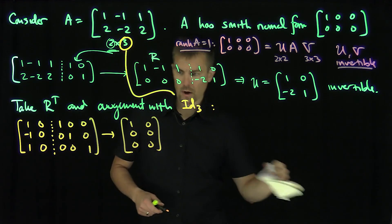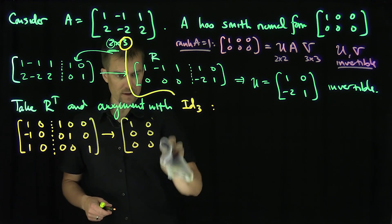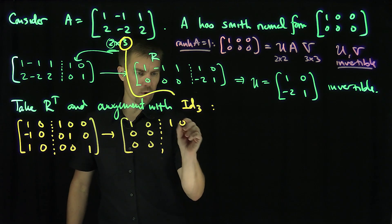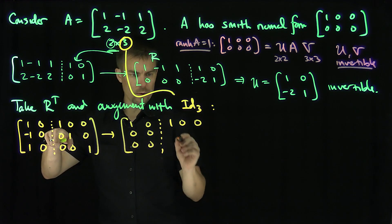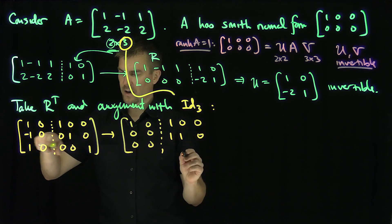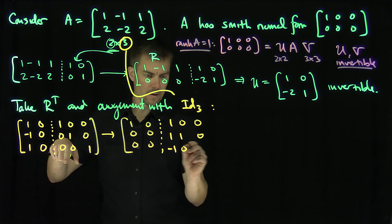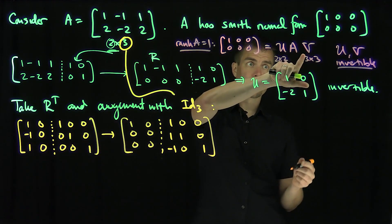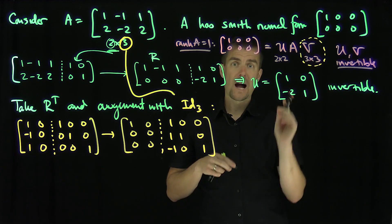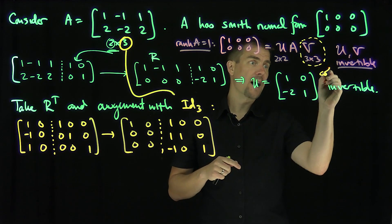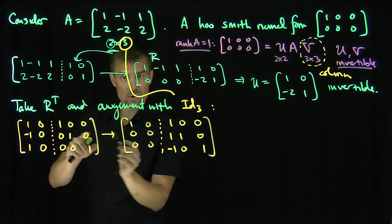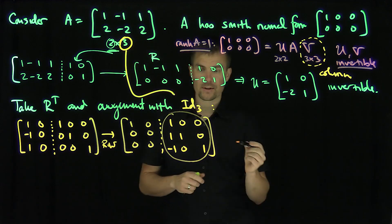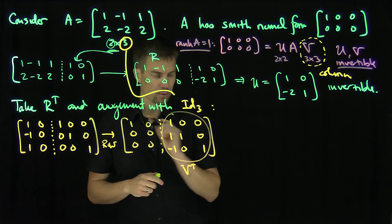I did row 1 plus row 2, and negative row 1 plus row 3. Row 1 stays the same; row 1 plus row 2 gives [1, 1, 0]; and negative row 1 plus row 3 gives the third entry. Since V operates on the right-hand side of A, I want to apply column operations — so by doing row operations on the transpose, I obtain V transpose.